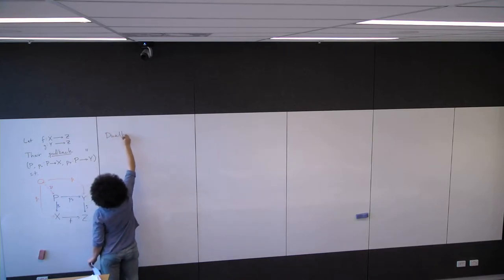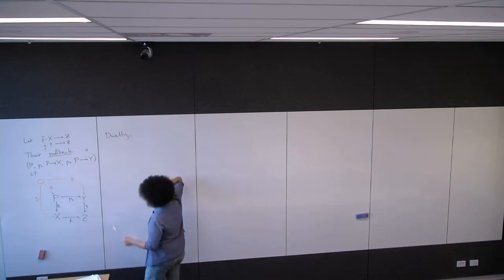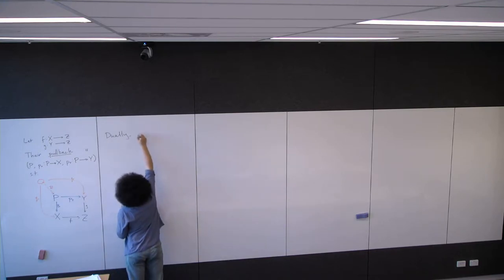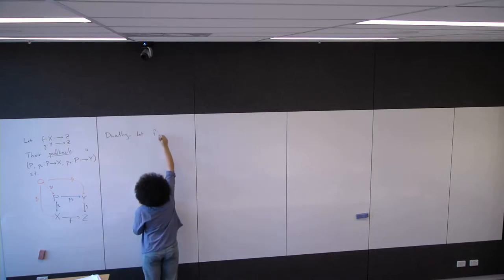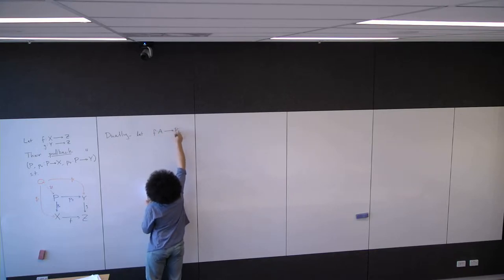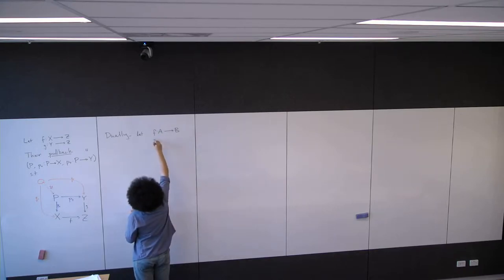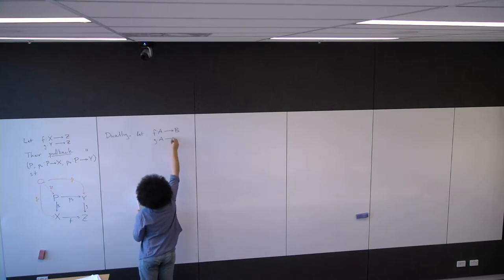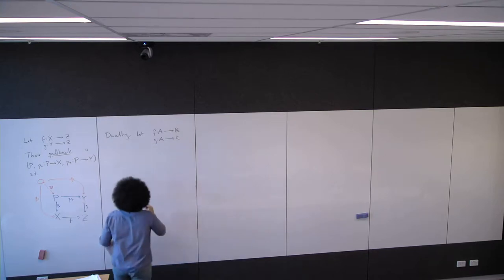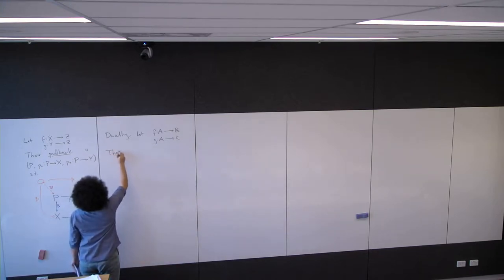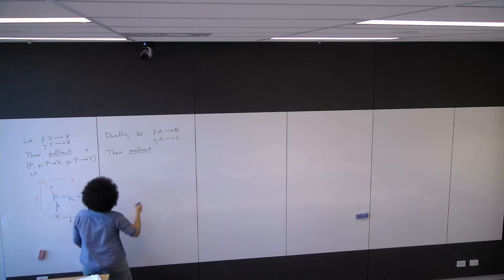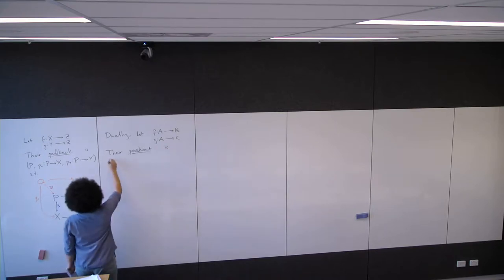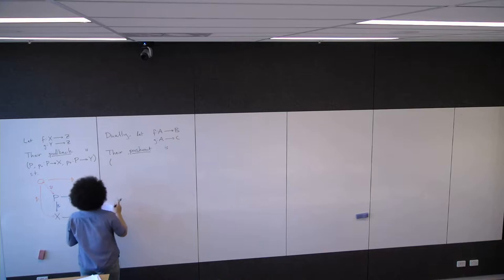If we have maps, we'll let f be from A to B, and g be from A to C. The pushout is again a triple, which I'll just call P again.